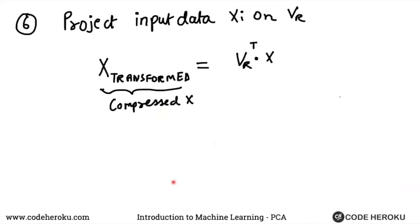The next thing that we want to do is we want to project this input data that we have. Remember, the whole point was to get a compressed representation of our data points. The whole point was to project our dataset onto something else so that we can get a compressed representation. What we will do is we will create this new vector x transform, which is also the compressed representation of x.